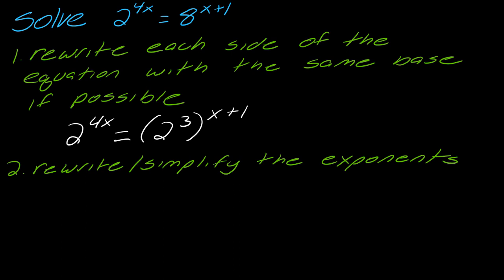Next, you want to simplify the exponents where possible, and you're going to use your rules of exponents here. On the left side, there's nothing we can do, so we leave this as 2 to the 4x. On this side, I'm going to use the power rule. I'll distribute that 3 to this x plus 1, so this becomes 2 to the 3x plus 3. Now we're exactly where we need to be, and now we can finish this. Once you have the same base and your exponents all simplified, you can set the exponents equal to one another and solve.